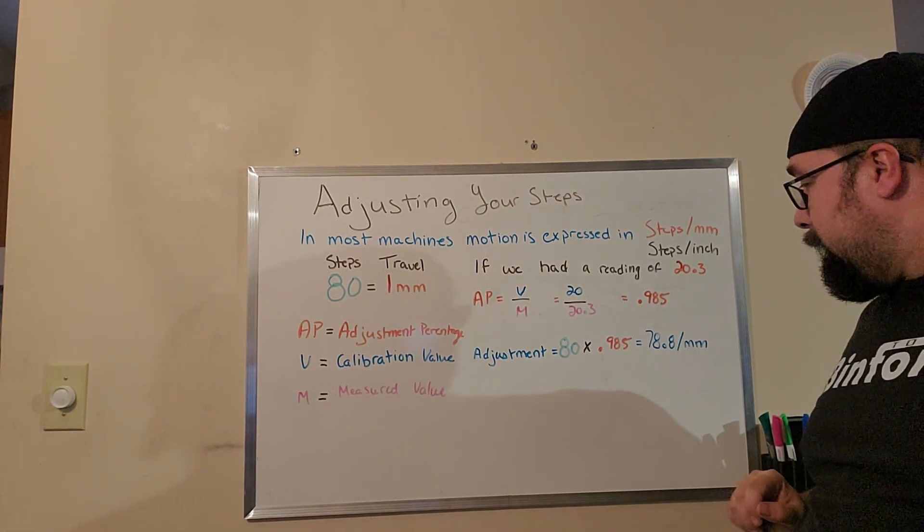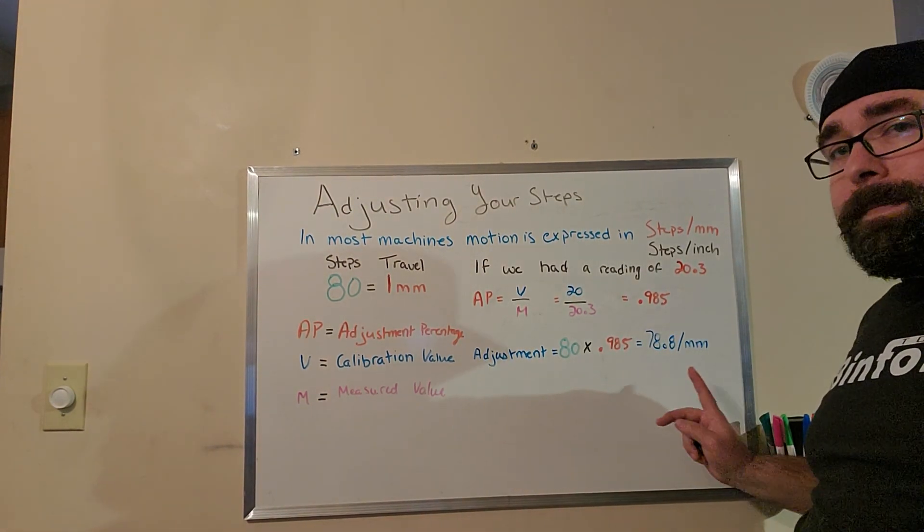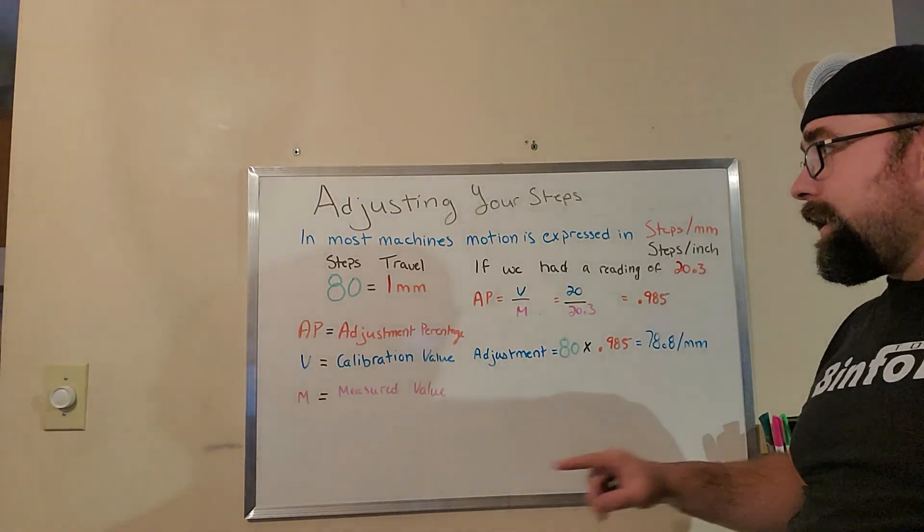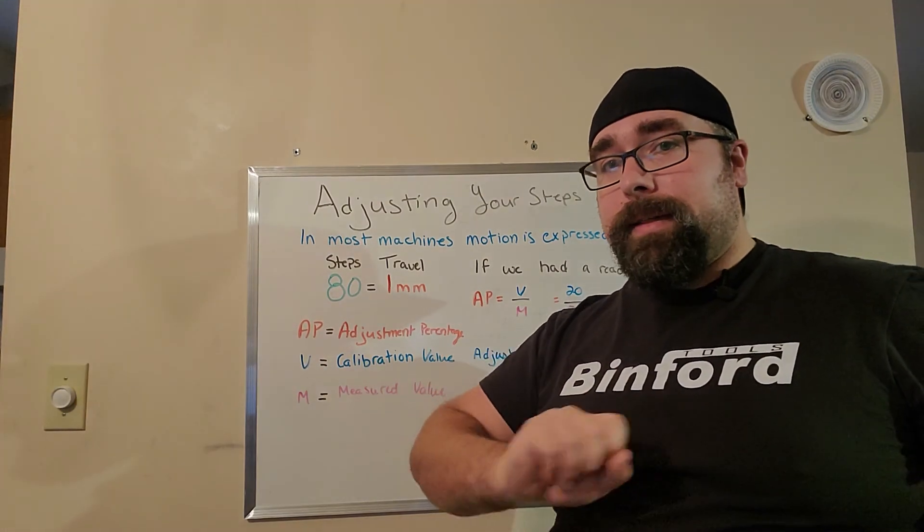So when we go to make the adjustment, we'll take our 80 millimeters from before and multiply it by the 0.985 and we get the new value, which is 78.8 steps per millimeter. And once you have that calculation, you just have to go type that in right where the 80 was and test again.